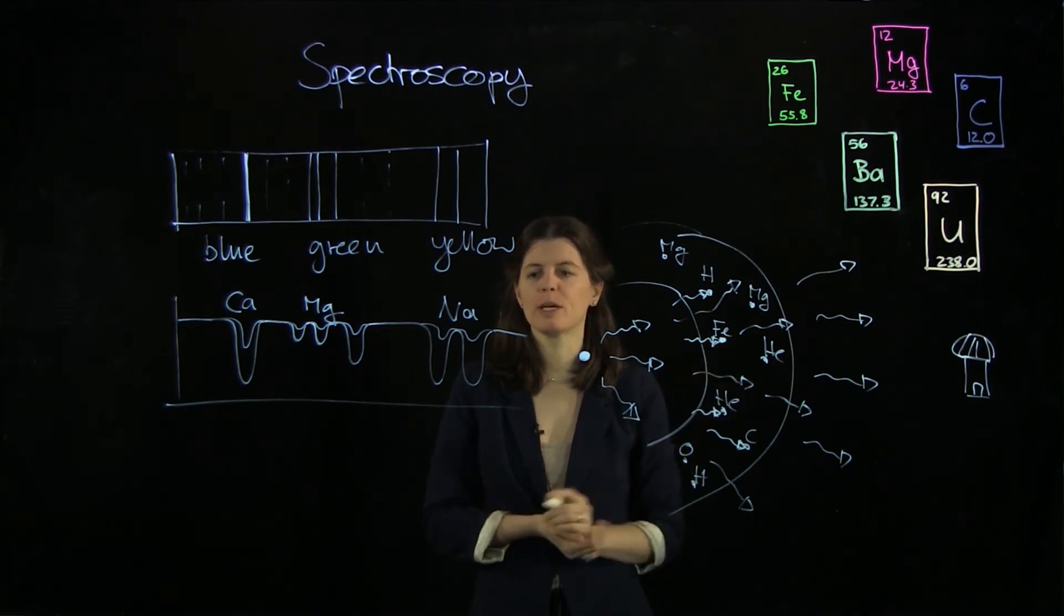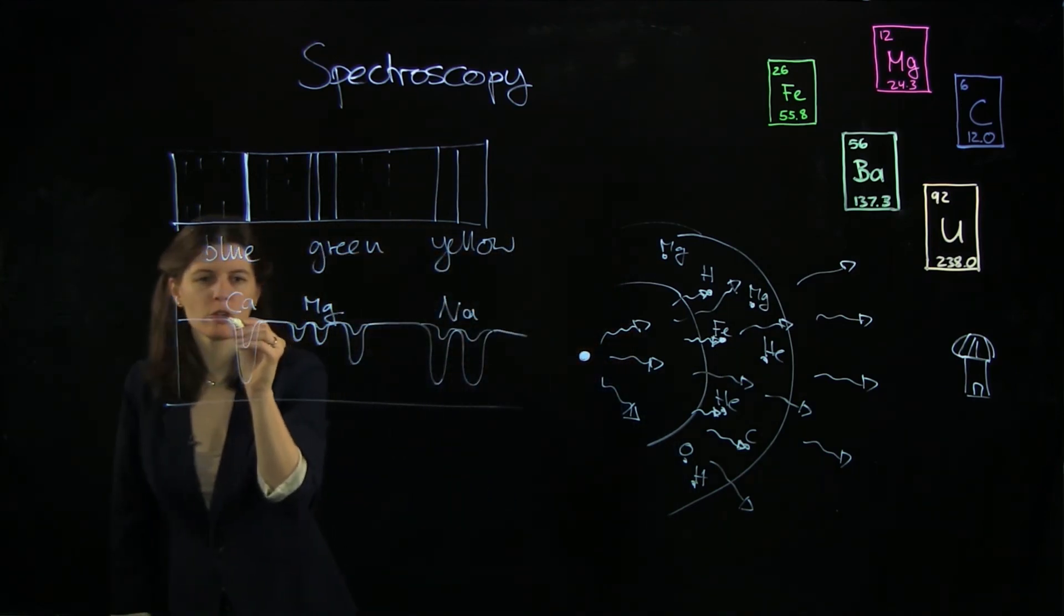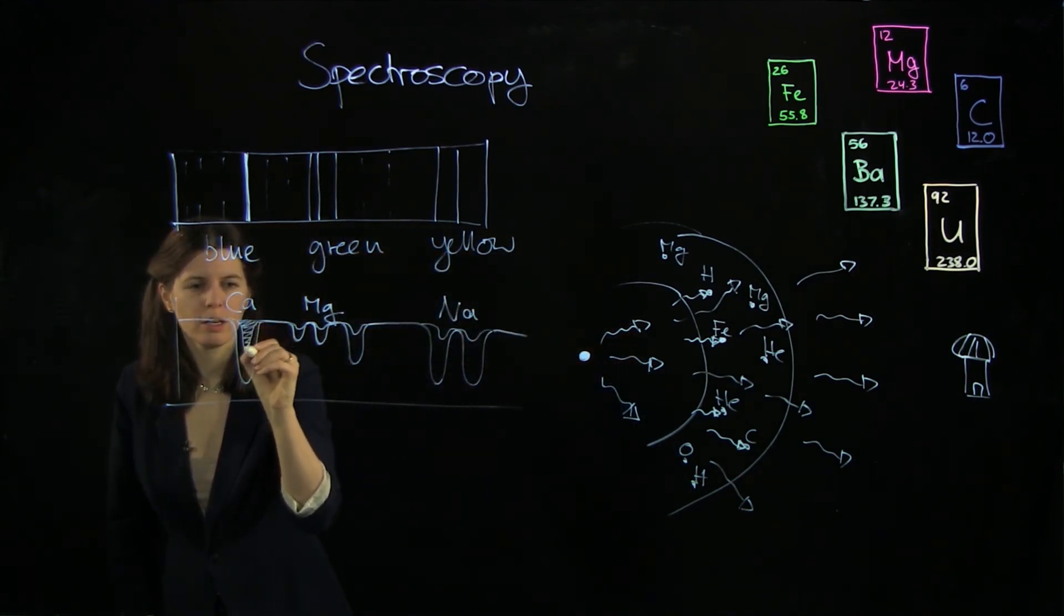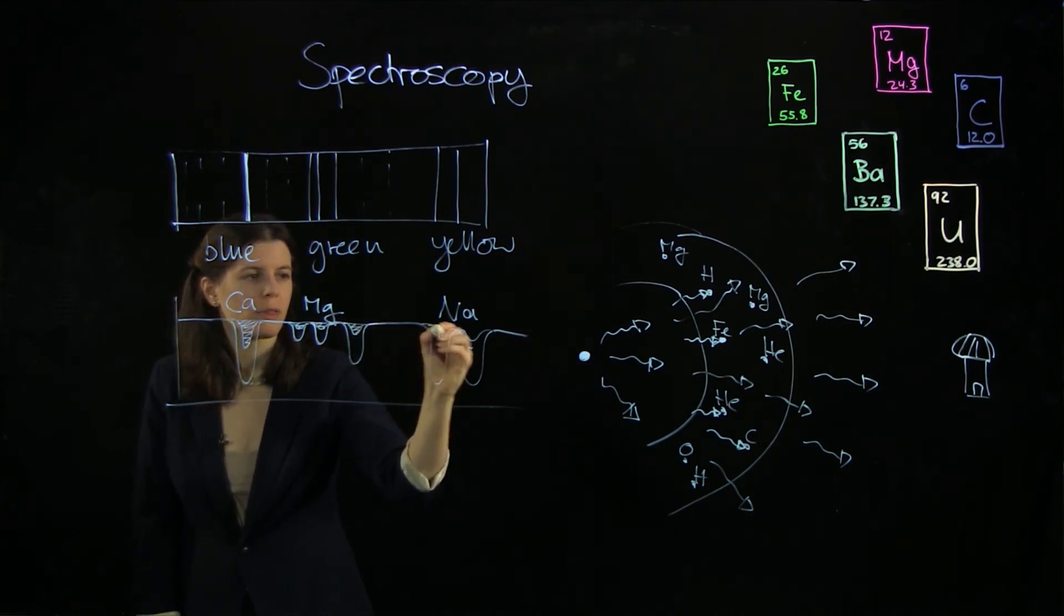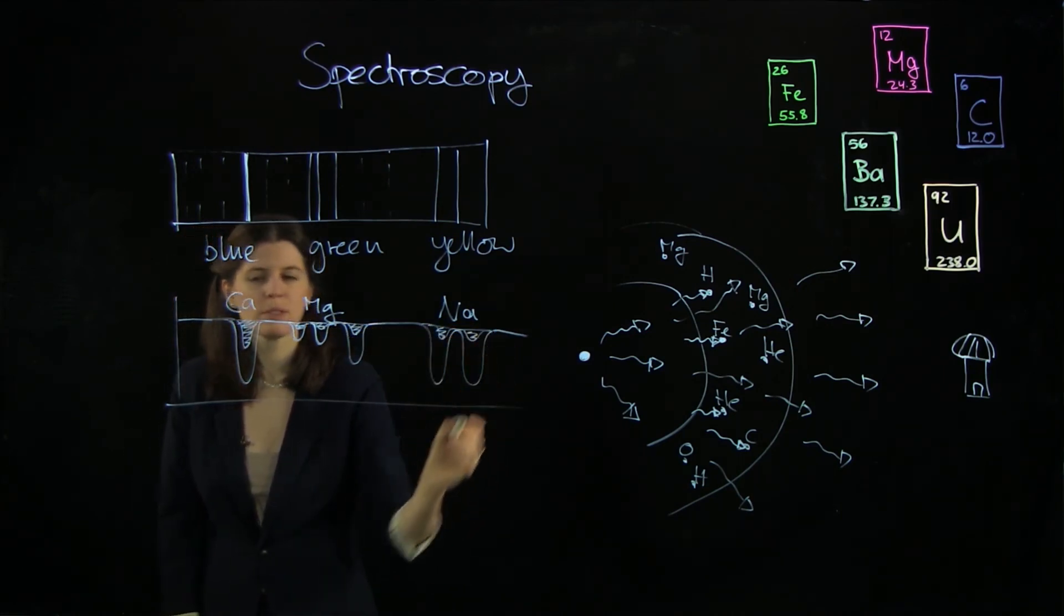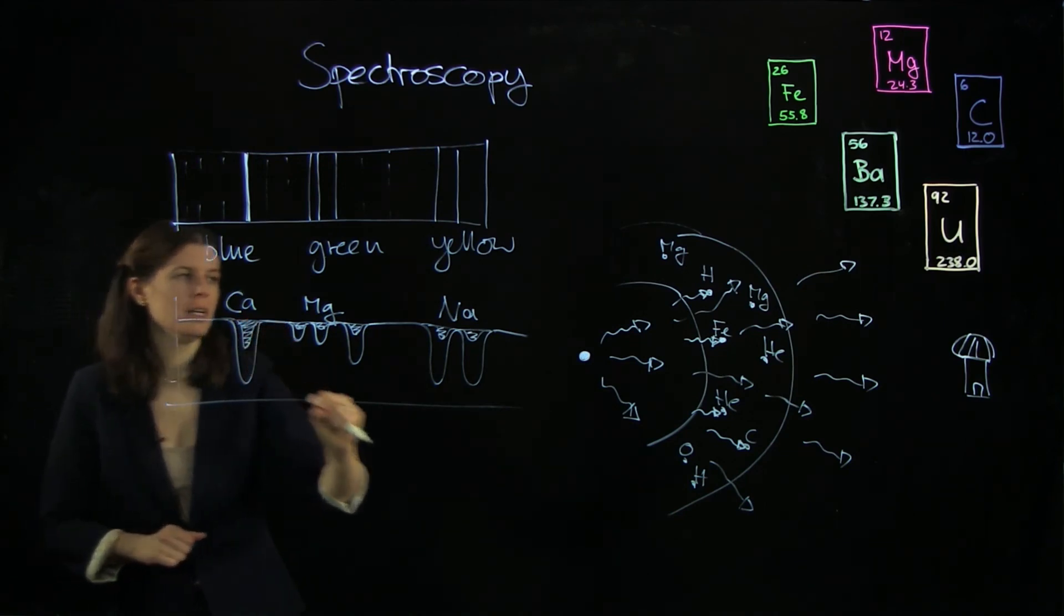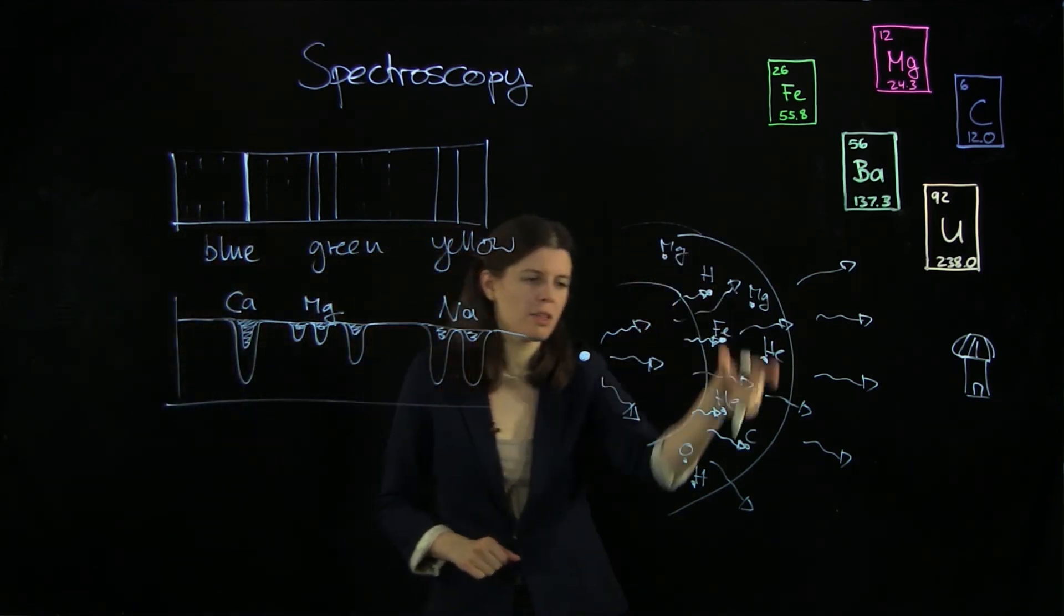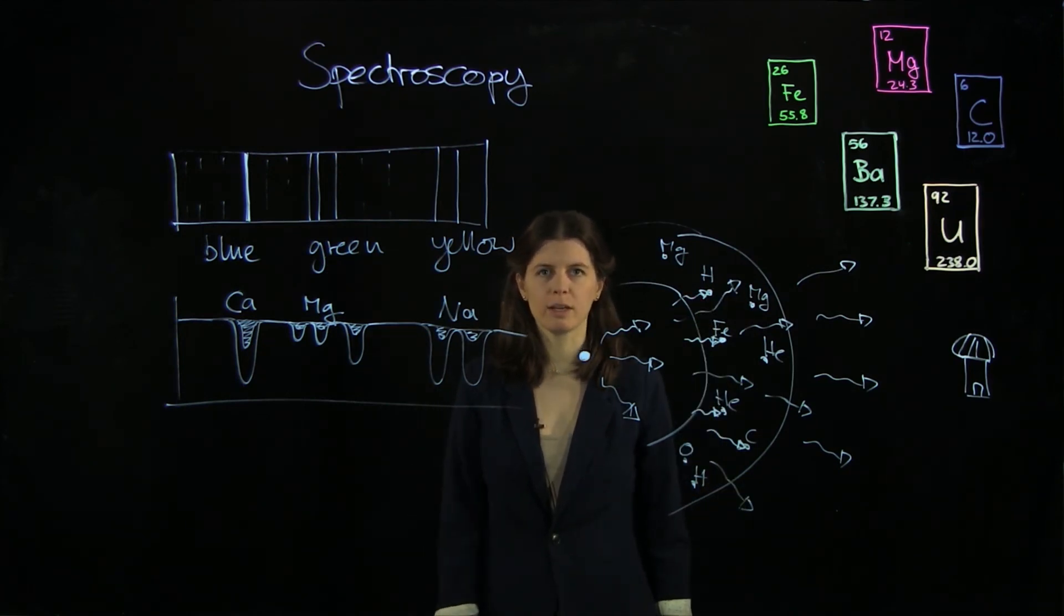We take these kinds of data here and we measure the line strength, we measure how much is present here. And with the help of computer programs and a whole bunch of physics, we can turn these line strengths here into an abundance in the stellar surface and that tells us about the formation time of these stars.